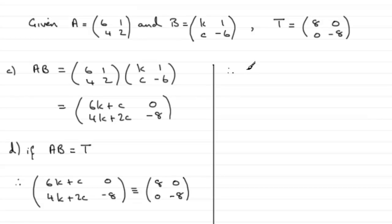We can see that therefore 6K plus C must be equal to the 8 here. Let's call this equation 1.